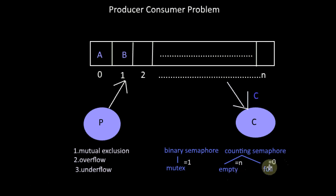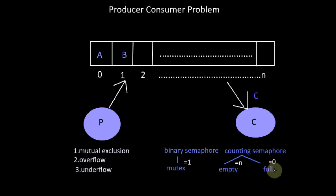In the beginning, the number of full buffers is 0. Thus, the full semaphore is initialized with the value 0. As the producer adds items to the buffer, the full semaphore will be incremented, showing that the full buffers are increasing. If the full semaphore has a positive value, the consumer can consume items from the buffer; otherwise, if the value is 0 or negative, the consumer should wait.